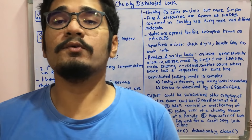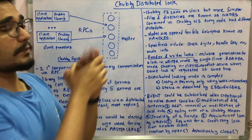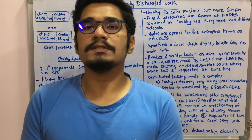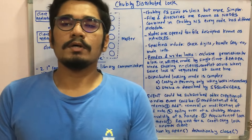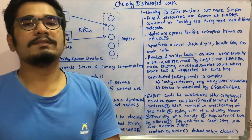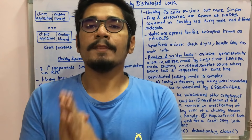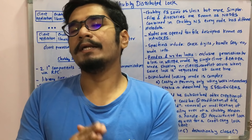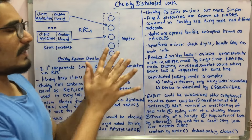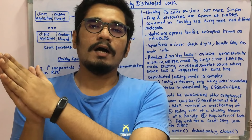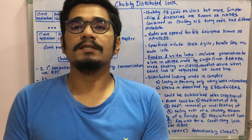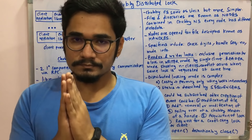Welcome back. Today we'll be seeing what is Chubby Distributed Lock in cloud computing. In my previous video I taught you the Google File System (GFS). This is another service provided by Google. We have many systems which are loosely coupled as well as tightly coupled. This Chubby lock service is provided by Google especially to provide reliable storage for loosely coupled systems, and it also provides a coarse-grained locking mechanism. Chubby is essentially a locking service which also provides reliable storage, coarse-grained locking, and high throughput rate for loosely coupled systems.